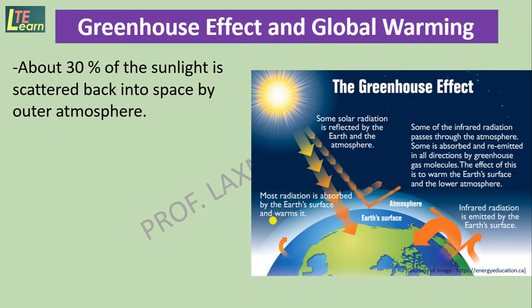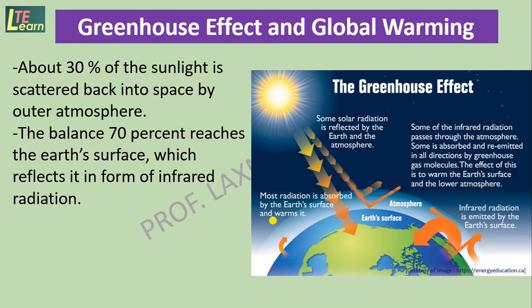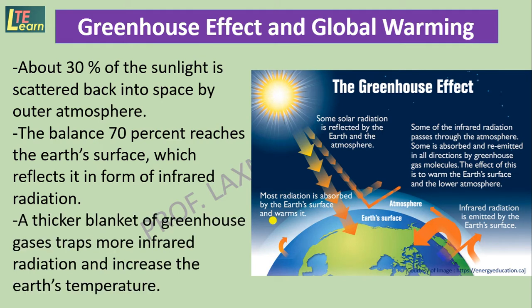About 30% of sunlight is scattered back into space by the outer atmosphere, and the remaining 70% reaches the earth's surface, which reflects it in the form of infrared radiation. A thicker blanket of greenhouse gases traps more infrared radiation, thus increasing the earth's temperature. This phenomenon is known as global warming.